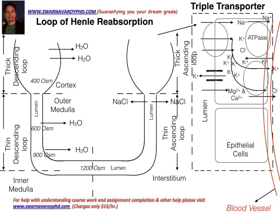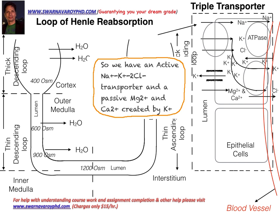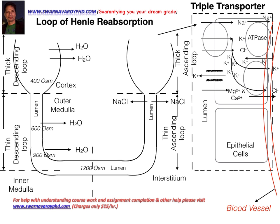We have an active sodium, potassium, and chloride transporter, and a passive magnesium and calcium reabsorption created by the potassium gradient. You have to understand that the uptake of magnesium and calcium is not active transport — it's passive transport. There is no energy required, no ATP. Calcium and magnesium ions come inside in exchange for potassium going outside. There's no energy; it's passive transport.